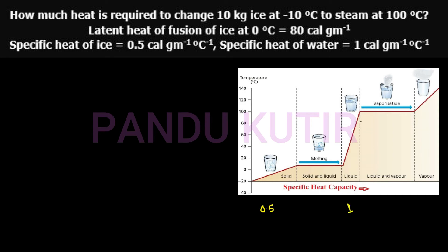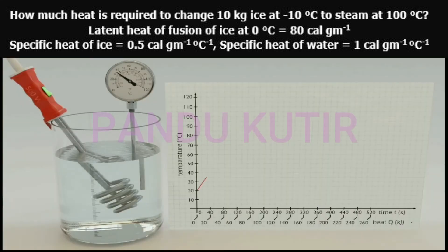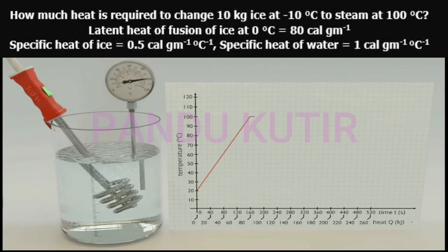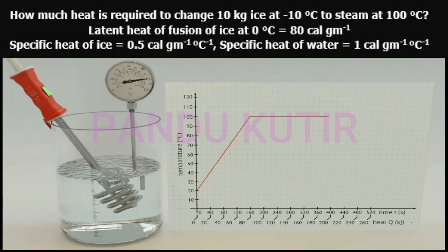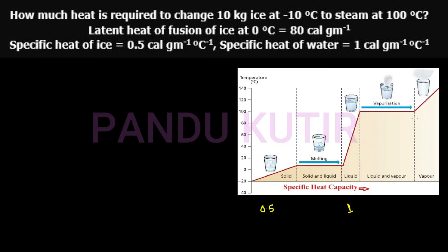The water reaches boiling point. The temperature rises until 100 degrees Celsius, and then at that point another phase change begins. The temperature remains at 100 degrees Celsius during vaporization.